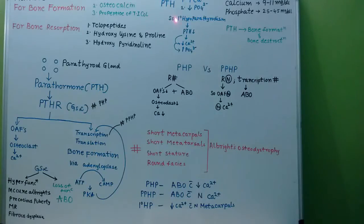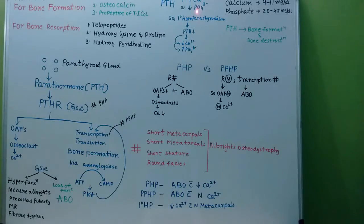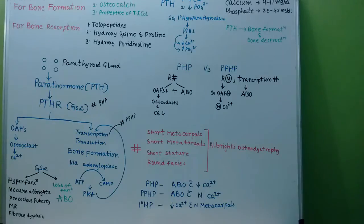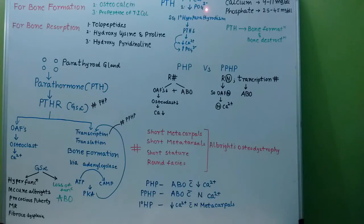Coming to the function of parathormone. Parathormone acts on bone and this is the fastest way to increase calcium. Parathormone increases calcium and decreases phosphate. To remember this: parathormone is also called PTH, which stands for 'phosphate thrashing hormone.' Parathormone decreases phosphate by increasing excretion of phosphate via the kidney. So, parathormone increases calcium and decreases phosphate levels.